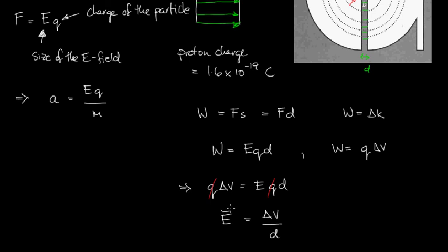So the electric field, and it is a vector, it has direction, is equal to the potential difference between the d's divided by the distance between the d's. Knowing the potential difference and the distance between the d's, we can calculate the magnitude of the electric field, and hence from this the acceleration of the particle when it passes between the d's.